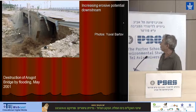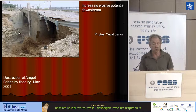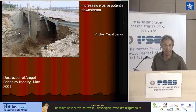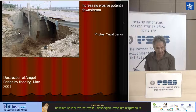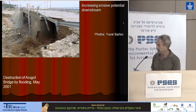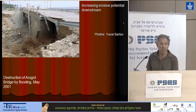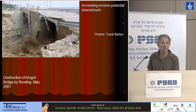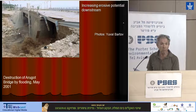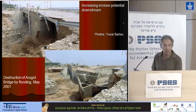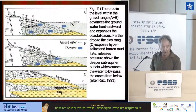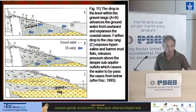Another impact is the increase of the erosional potential of downstream areas, which brings damages to infrastructure like bridges. Flash floods are a very impressive phenomenon and people come to see them — the best place being on the bridge, of course. People who stood on a bridge heard suddenly strange noises, and here you can see what happened to the bridge after just 10 minutes.